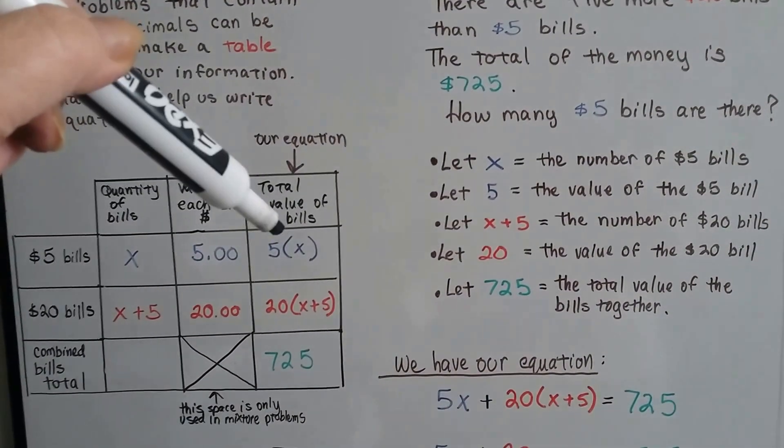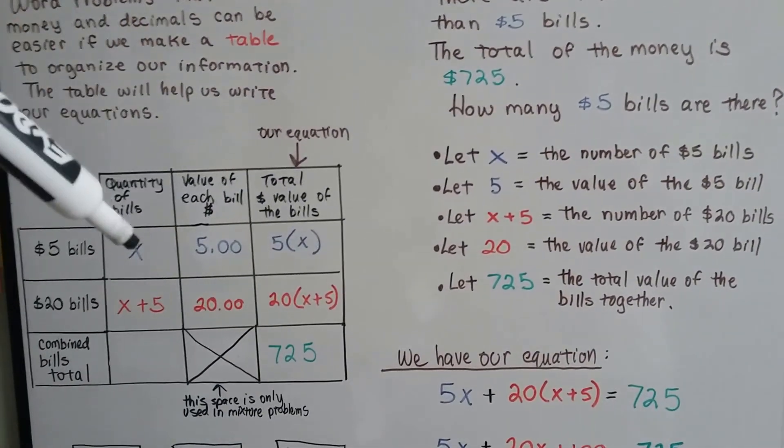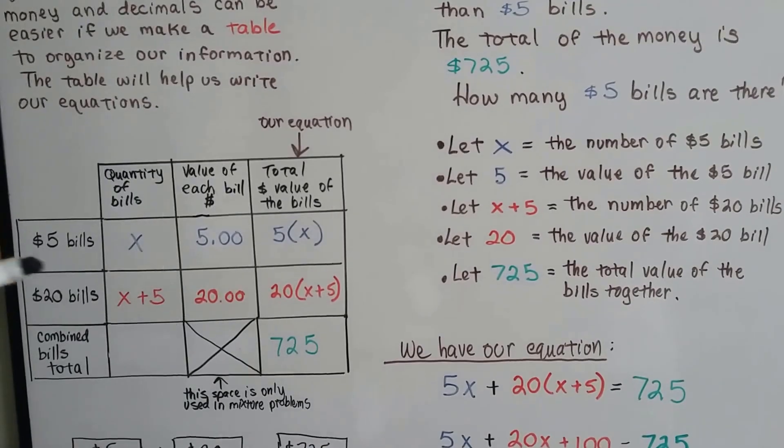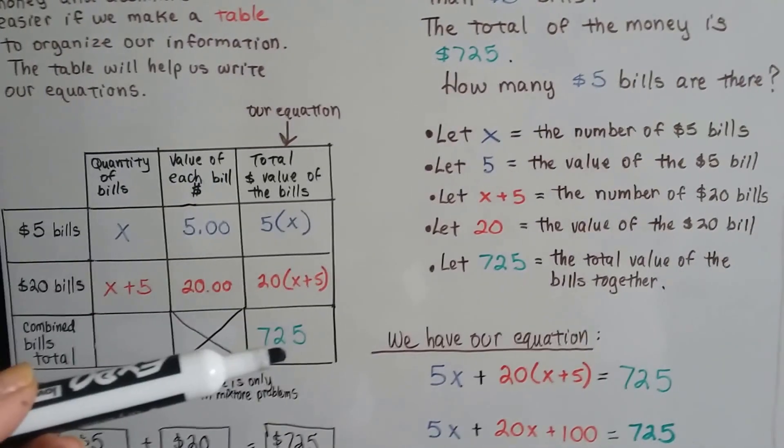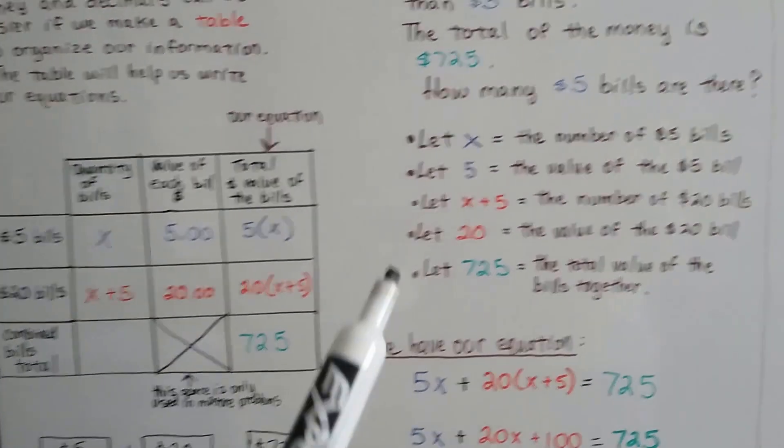See how this last column is going to be this amount times this amount? We've got our $5 bills, our $20 bills, and this is the combined total of $725 over here.